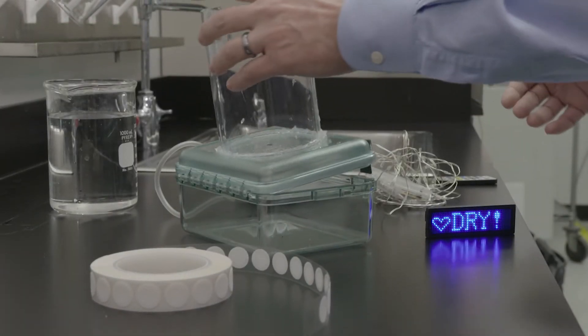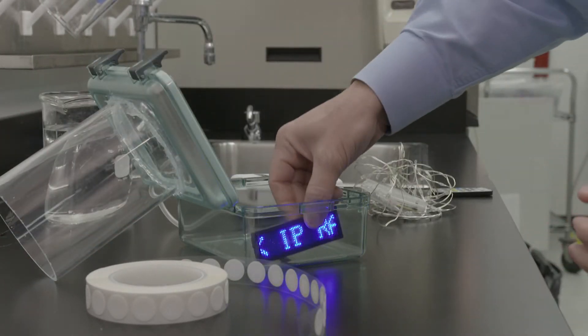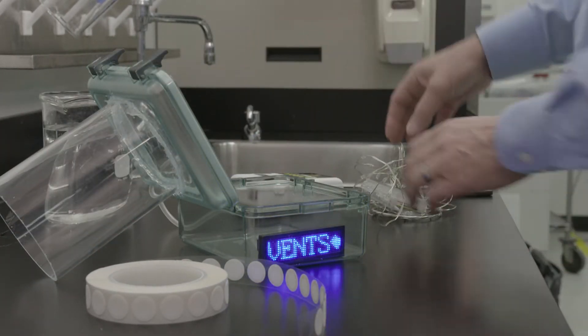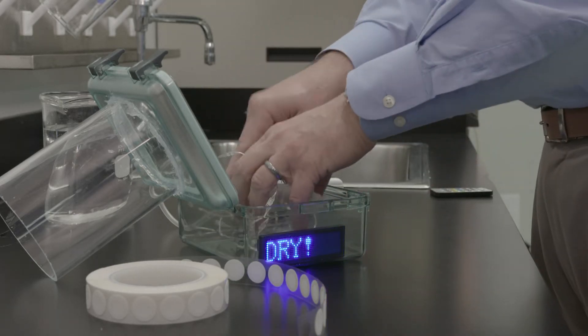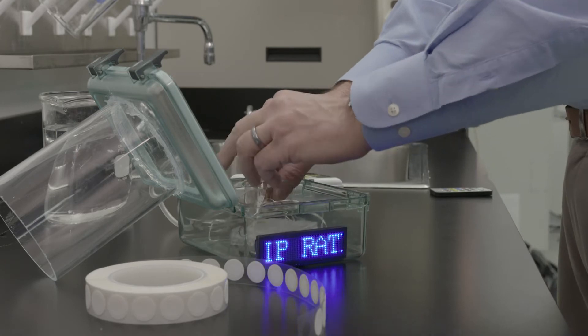This is our sealed enclosure. We will open it up. Put in the electronics. Of course, these electronics you want to keep dry. You don't want them to be wet. So how do you do that?